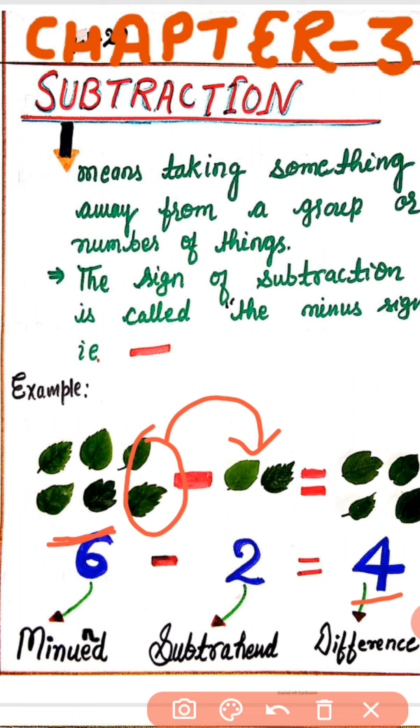What is the minuend? The bigger number is called the minuend. The number to be subtracted is called the subtrahend. The answer we get after subtraction is called the difference. Thank you.